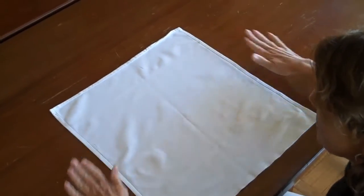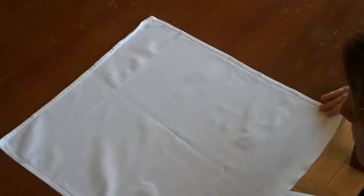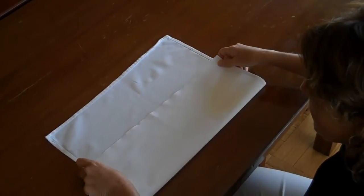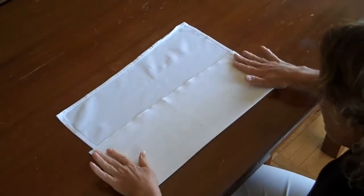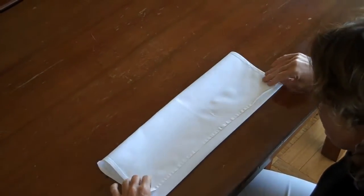We'll start with our napkin seam side up and we're going to take our napkin and fold it into thirds, bringing the bottom up one third and the top down one third.